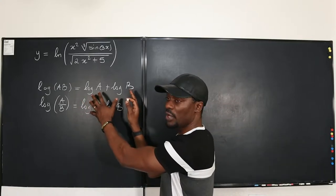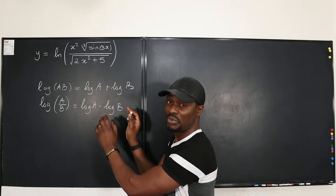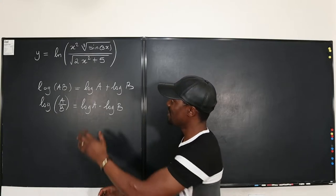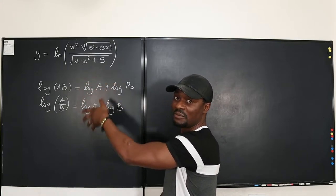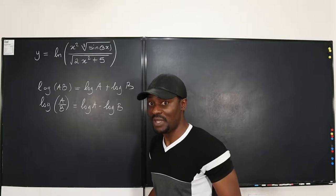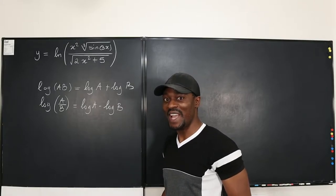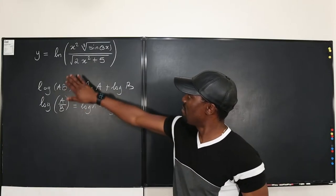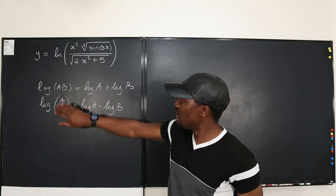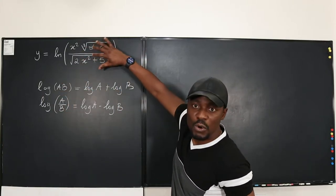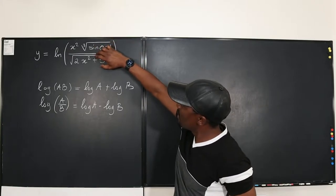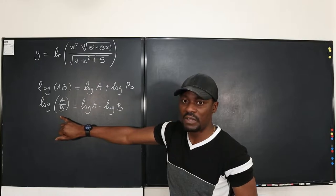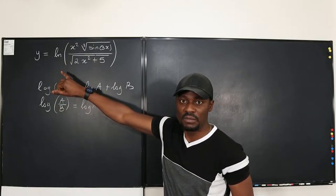If you do not recall this from your algebra or pre-calculus class, you have to go clean up, because it's very important that you already know this. So now let's take the very first step. As you can see, this is a quotient — there's a function on top and a function underneath. So we're going to apply the logarithm quotient rule as the first step.